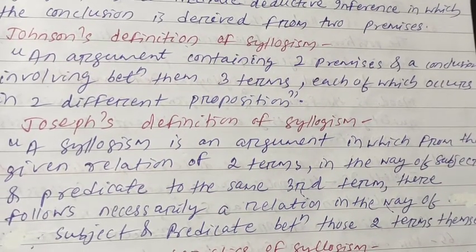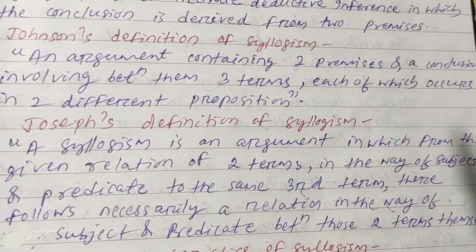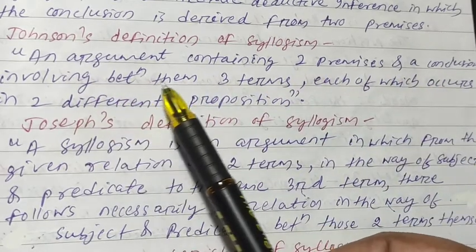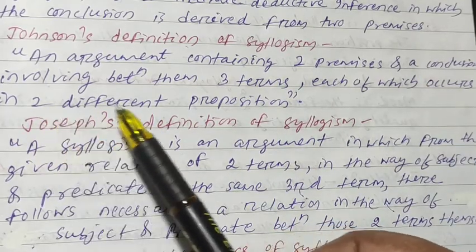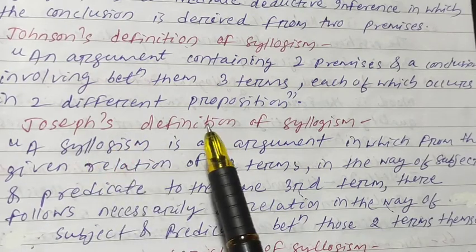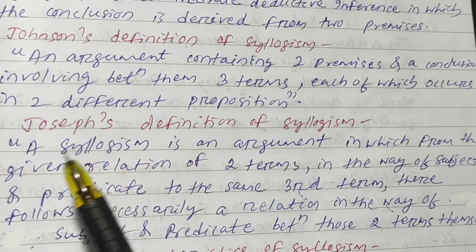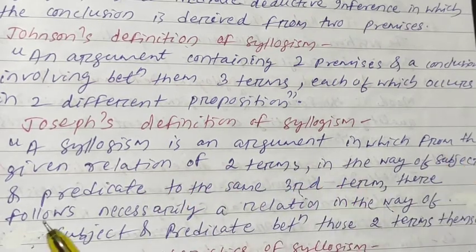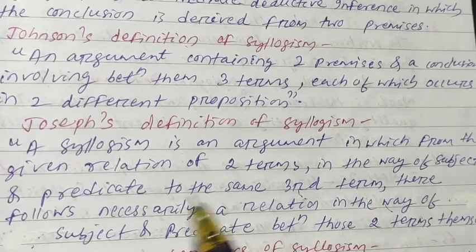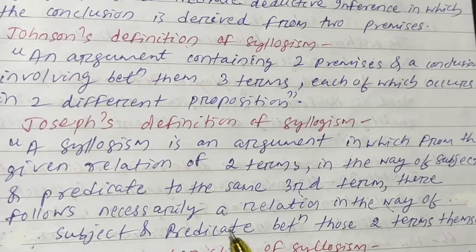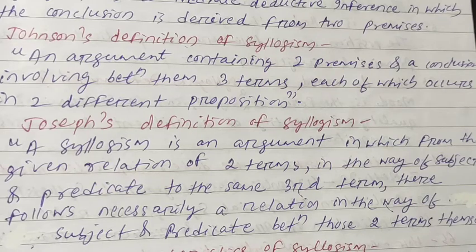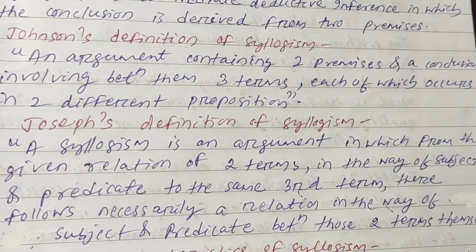Different philosophers have defined syllogism differently. According to Johnson, a syllogism is an argument containing two premises and a conclusion, involving three terms each of which occurs in two different propositions. According to Joseph, a syllogism is an argument in which from the given relation of two terms as subject and predicate to the same third term, there necessarily follows a relation as subject and predicate between those two terms themselves.